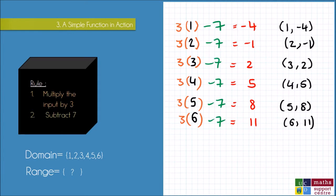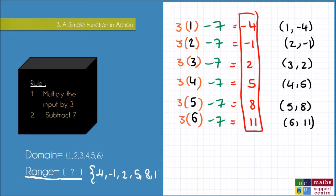So now I can easily say what the range of my function is, because the range, remember, is the set of actual outputs. So what are the actual outputs when I use that particular domain? Well, it's all of these red numbers here, they're all my outputs. So I could write the range as minus 4, minus 1, 2, 5, 8, 11.